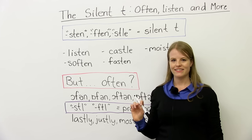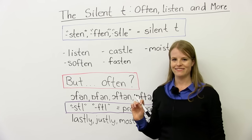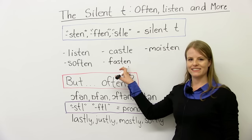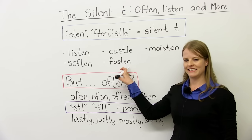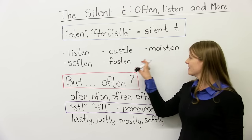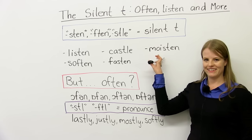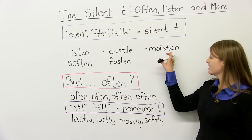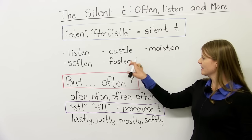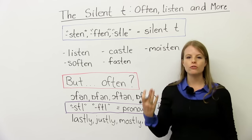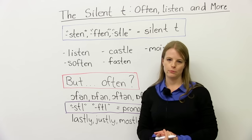Castle, castle. Fasten, fasten. Last one. Moisten. Moisten. So even though you see T-E-N, T-L-E, T-E-N, you do not pronounce the T in these words.